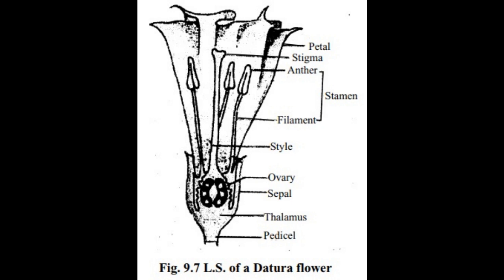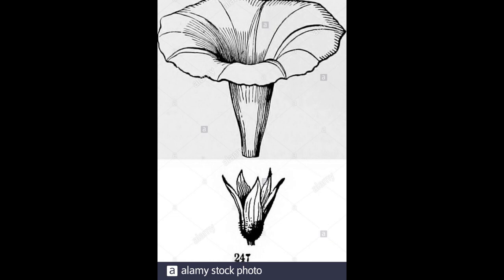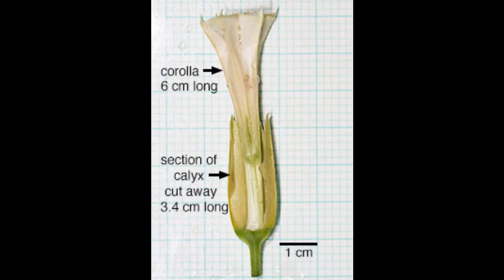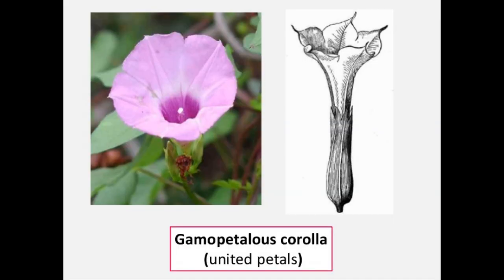The datura flower contains four types of structures: calyx, corolla, androecium, and gynoecium. Just above the thalamus there is a green tube-like structure called calyx. The edges towards the petals have thin leaf-like structures called sepals. The lower ends of the sepals are fused to form a tube-like structure, which protects the flower when it is in bud stage. There is also a funnel-shaped structure called corolla, formed by the fusion of petals.